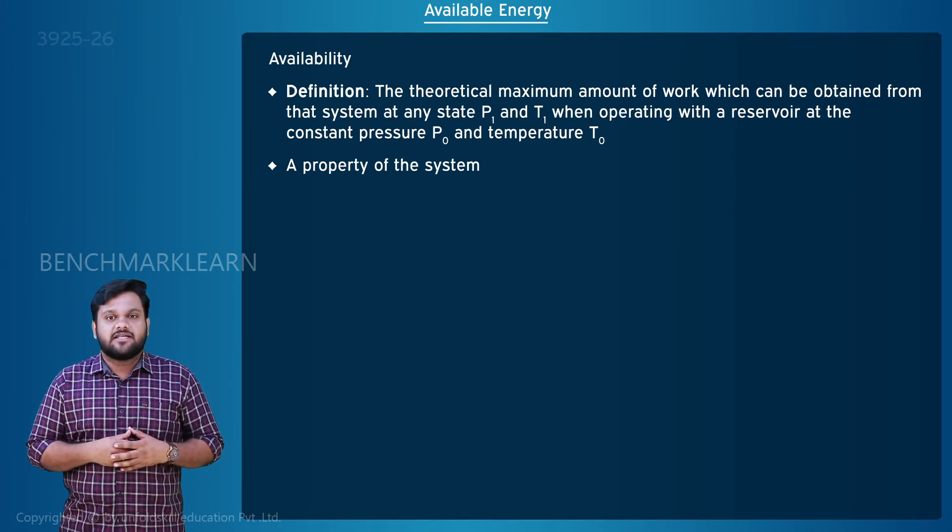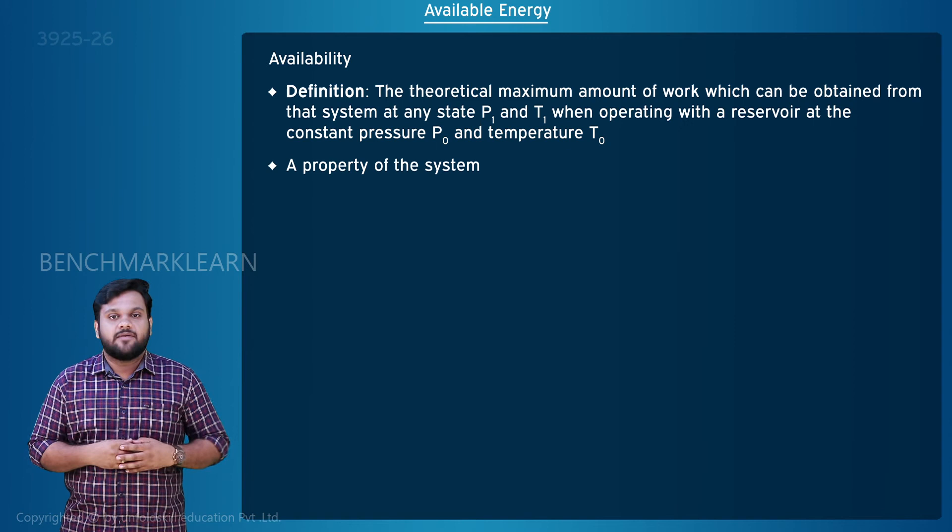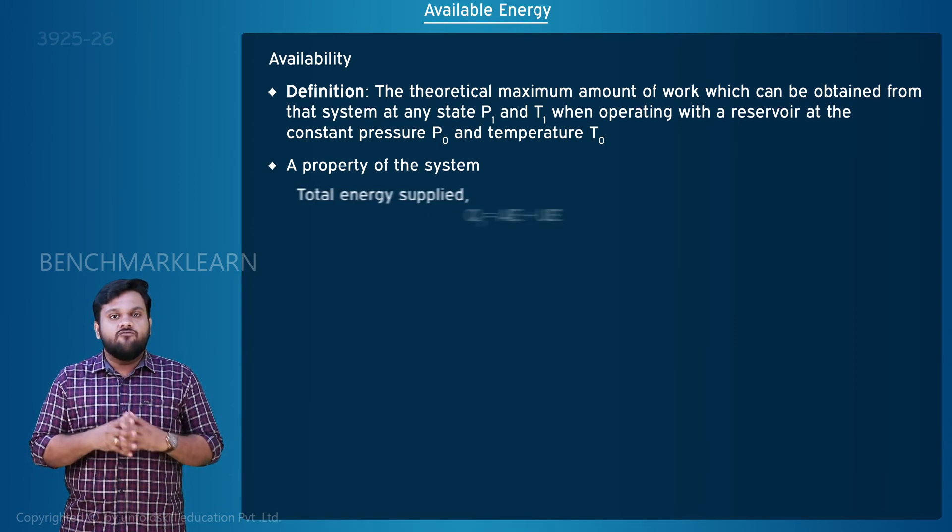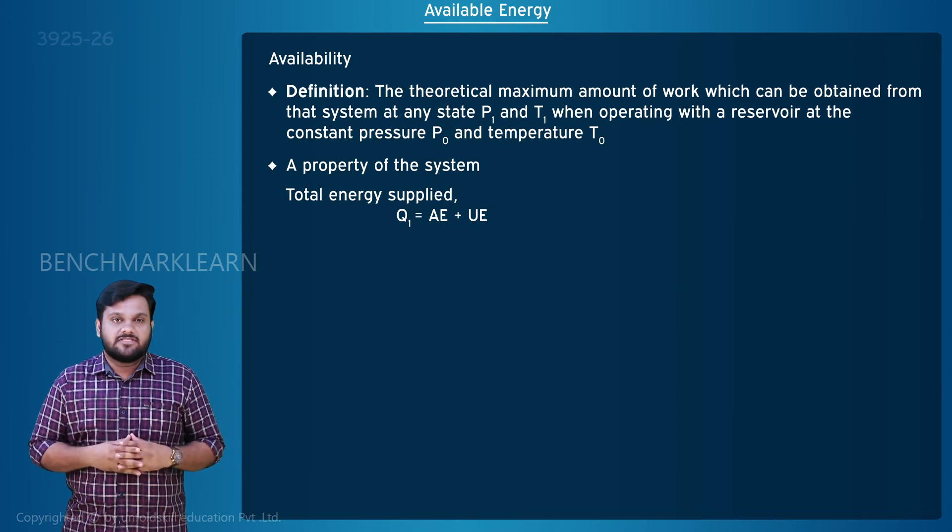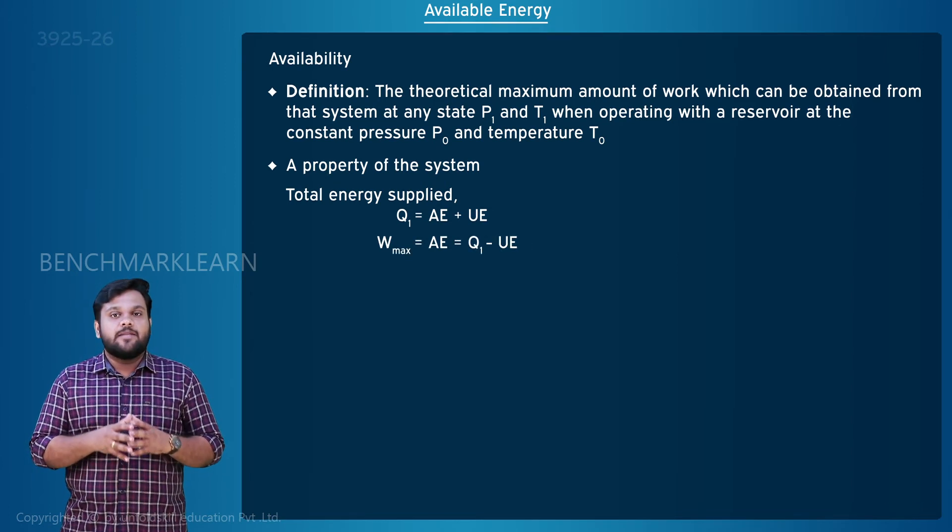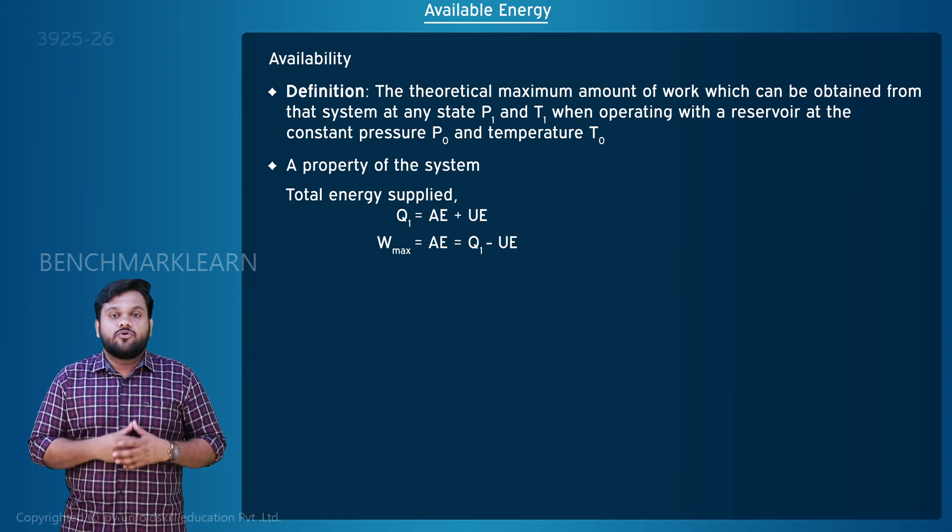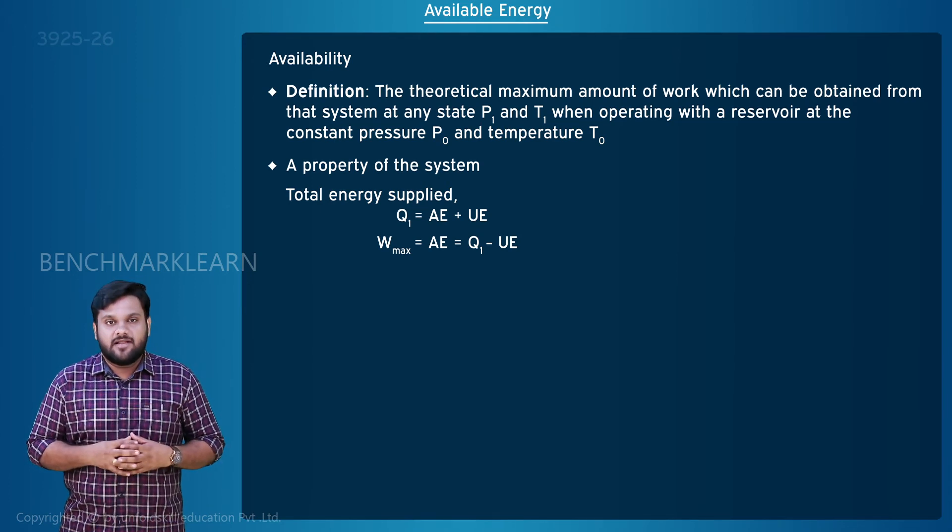The minimum energy rejected to the sink is the unavailable energy. Q1 is equal to available energy plus unavailable energy. W max is equal to available energy which is equal to Q1 minus unavailable energy.